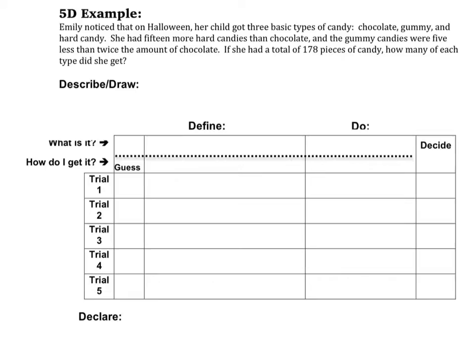If you already know it, you can go ahead and watch this again, but it is kind of long because I'm going to explain why we do each step. The 5D process, or the guess and check process, is just a way to help us solve word problems by helping us organize the information so that we can kind of get to the answer quicker.